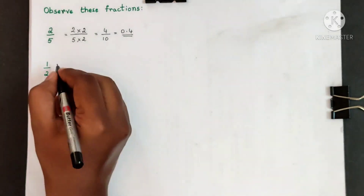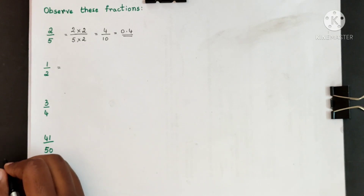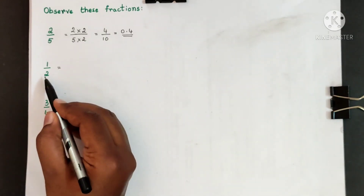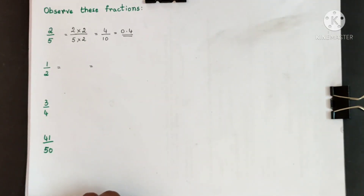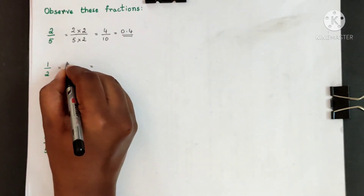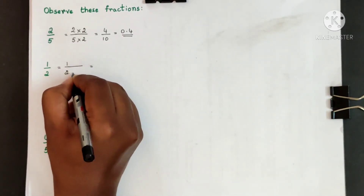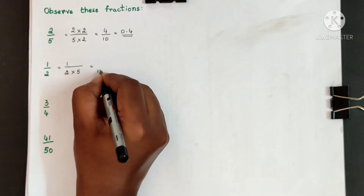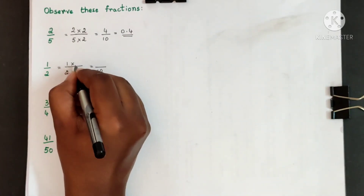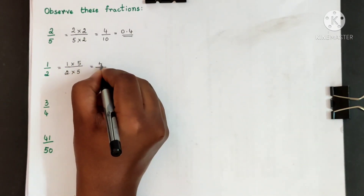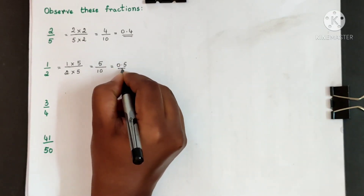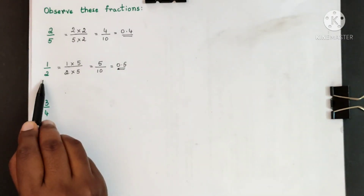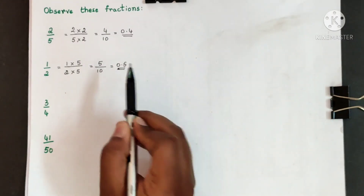Let us see the next number: one half. What is the decimal fraction of half? Let us find it out. Which is the first number you could get as either 10 or 100? 2 how many times gives you 10? The answer is 2 fives are 10. So first write the number as it is. Multiply the denominator by 5 to get 10 as the denominator, and multiply the numerator also by the same number. That gives 5. So 5 tenths gives you 0.5. Always remember, half is written as 0.5 in decimal fractions.